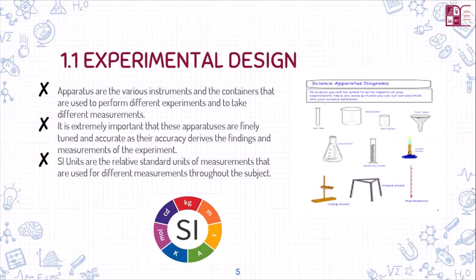First, our learning objective was about apparatuses. Basically, apparatuses are various instruments or containers used in an experiment. We measure different chemicals and substances using those apparatuses. It is extremely important that these apparatuses are finely tuned and must be as accurate as possible, so that whatever findings and measurements we take during the whole experiment are accurate.